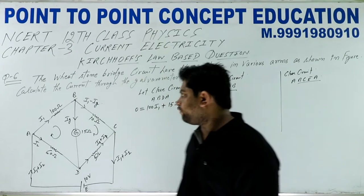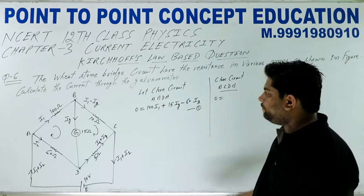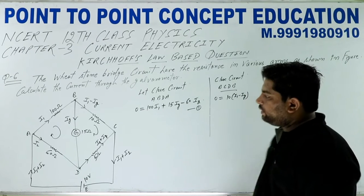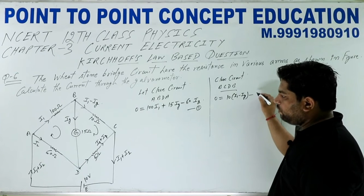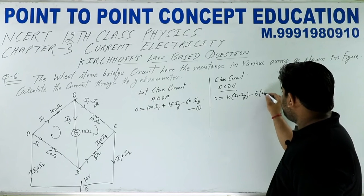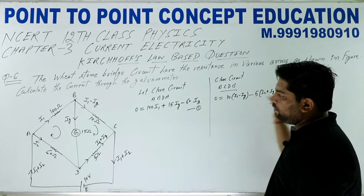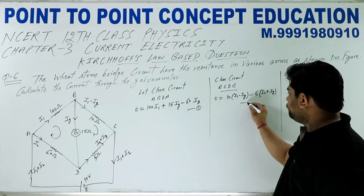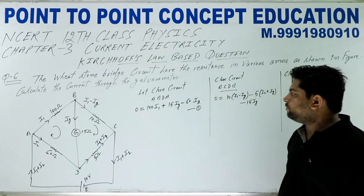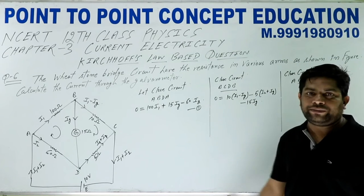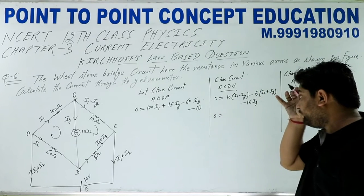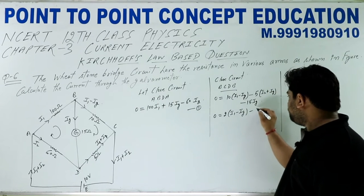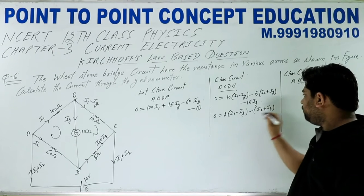इस वाले circuit BCDB में battery या cell नहीं है, तो EMF = 0। 10 में से current flow कर रहा है clockwise direction में — (I1 - IG), इसके बाद negative 5·I2 plus IG, यह वाला भी opposite direction में है तो minus 15·IG।